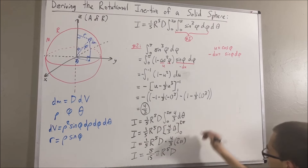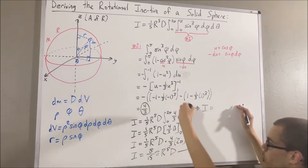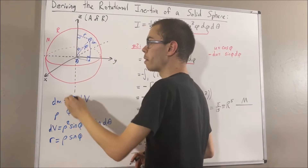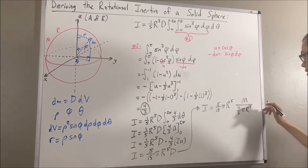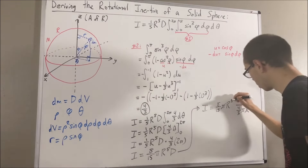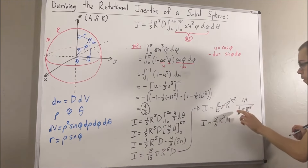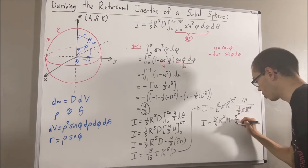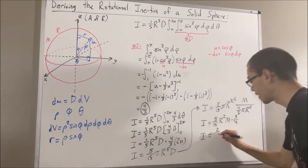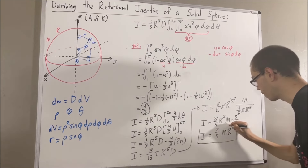Now let's re-express density as mass over volume. The volume of our sphere is four-thirds pi R cubed. The pi's cancel out, and R to the fifth divided by R cubed leaves us with R squared. So we have eight-fifteenths R squared M divided by four-thirds — in other words times three-quarters. Eight divided by four gives us two in the numerator, three divided by fifteen gives us five in the denominator. So the rotational inertia of a sphere is two-fifths M R squared.